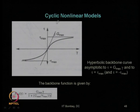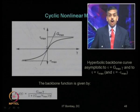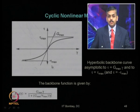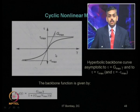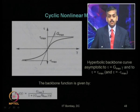Various parameters affecting damping ratio and their influence were proposed by Dobry and Vucetic (1987). For cyclic non-linear models, to capture the exact behavior of shear stress vs. shear strain, the initial tangent modulus gives G_max. The hyperbolic backbone curve is given by: τ = G_max·γ / (1 + (G_max/τ_max)·γ), which is asymptotic to both τ = G_max·γ at small strains and τ = τ_max at large strains.